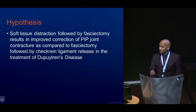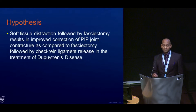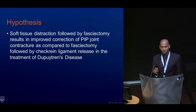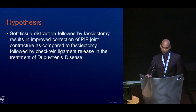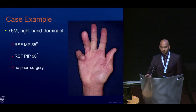The hypothesis of our paper was to compare the two groups: the fasciectomy with check rein ligament release cohort, and the digit widget cohort for Dupuytren's disease.